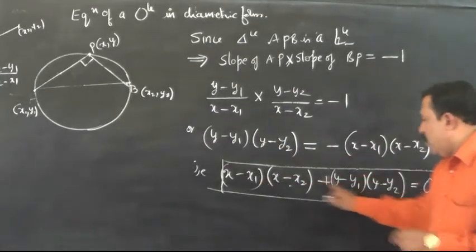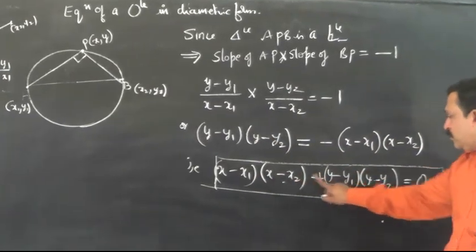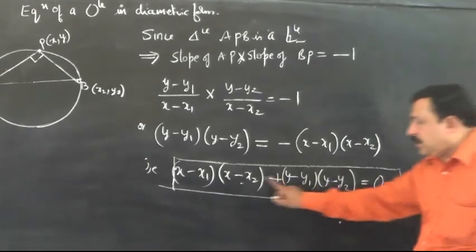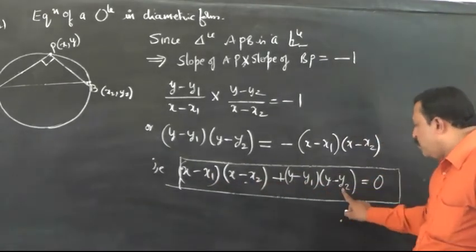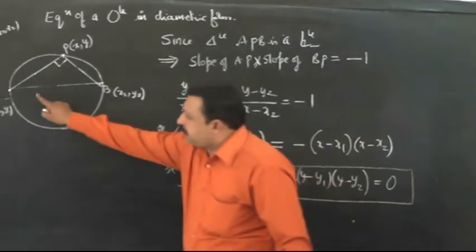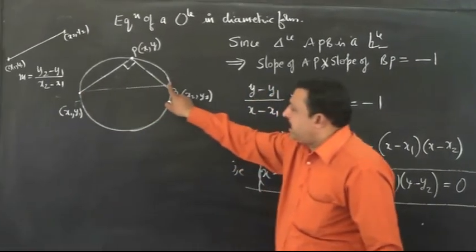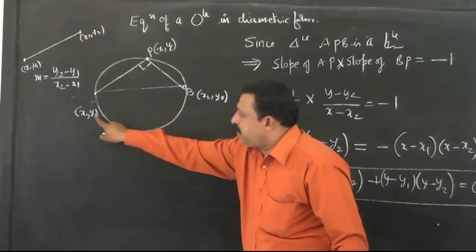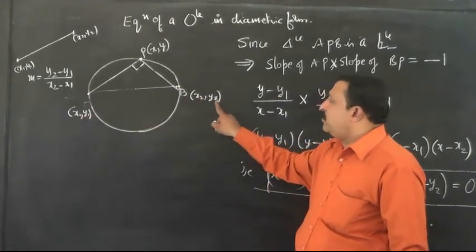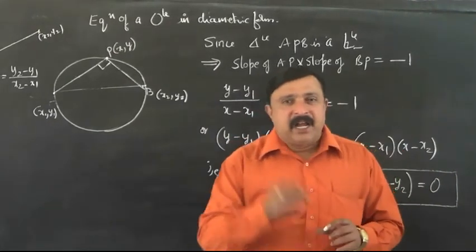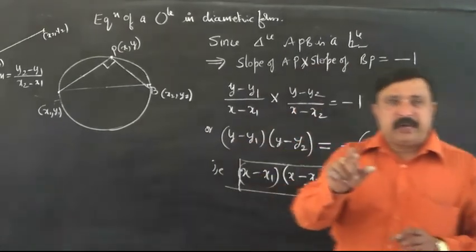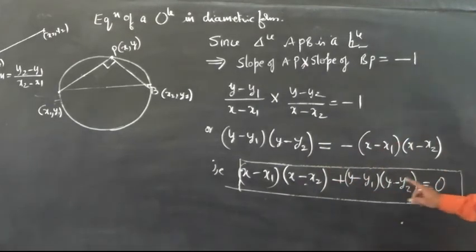Now remember, X1, Y1, X2, Y2 are the coordinates of the two ends of the diameter. A is X1, Y1; B is X2, Y2. So the final equation in diameter form is X minus X1 into X minus X2 plus Y minus Y1 into Y minus Y2 is equal to 0.